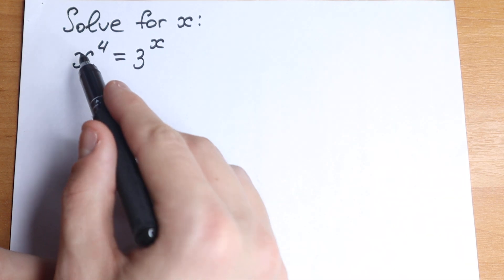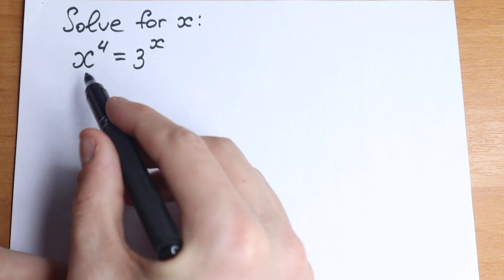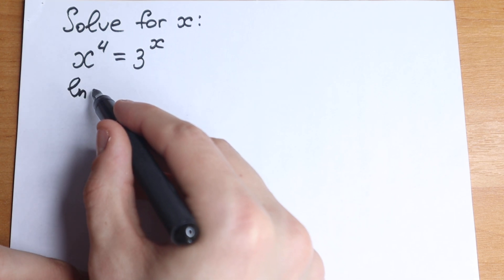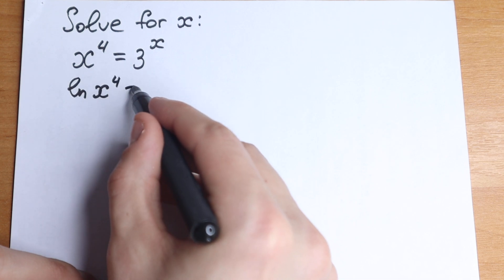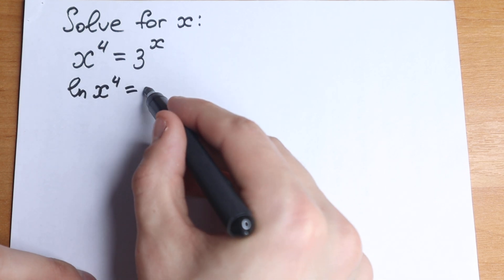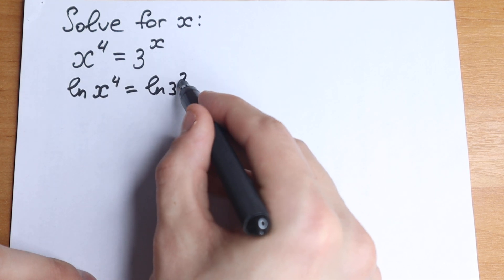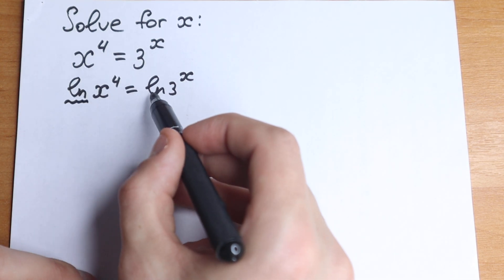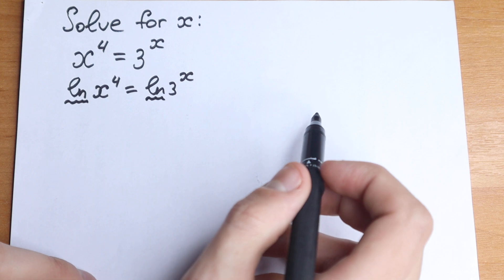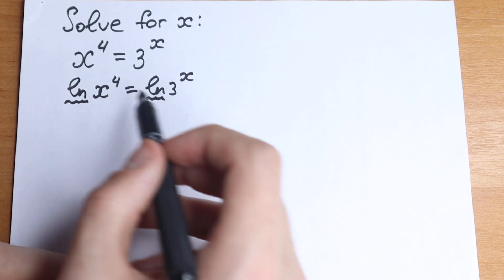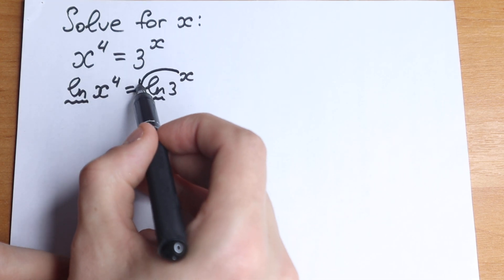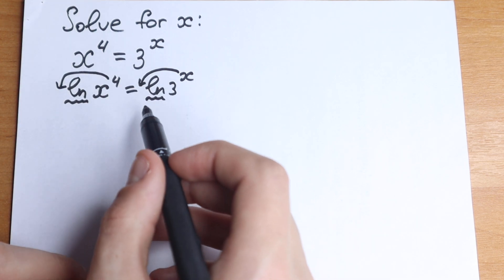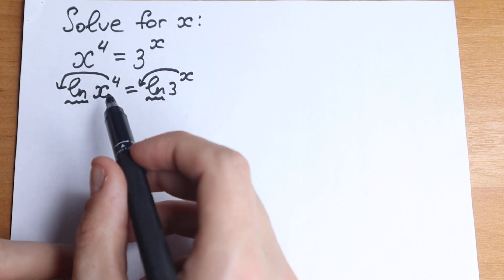First of all, we have x to the 4th power, which is really great because we can easily take the natural log. So let's take the natural log on both sides. If you know a little bit about natural log, the exponent x jumps out front, and the 4 jumps out front as well. So we can easily write it using the main log property.